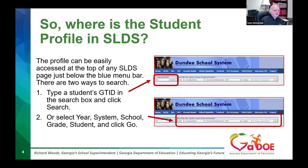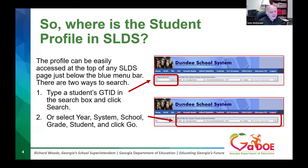So where is the student profile in SLDS? The easiest way to get to one particular student is at the top of your SLDS dashboard, where you can search by GTID. Most people don't memorize student GTIDs, so you can go to the right of that search box where you'll select the school year, district, school, and grade. Once you click the grade, the student names will populate in alphabetical order, and you can select a student and click 'Go' to view their profile.